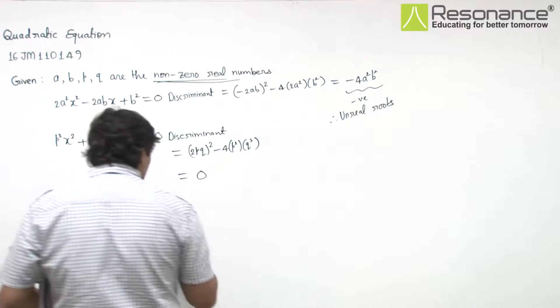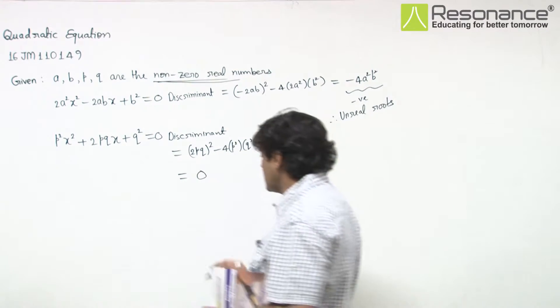That means this is 0. 4p square, p square, 4p square cancel.